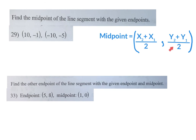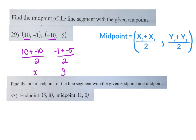For this midpoint example, I'm going to take my X's and add them: 10 plus negative 10, over 2 — that's the X value of my midpoint. Then negative 1 plus negative 5, over 2 — that's the Y value. So 10 plus negative 10 is 0 over 2, which is just 0. Negative 1 plus negative 5 is negative 6 over 2, which is negative 3. Your answer is the point (0, negative 3).